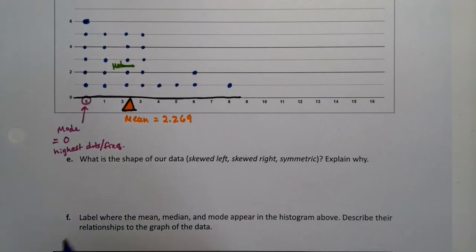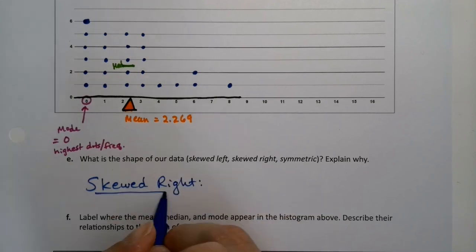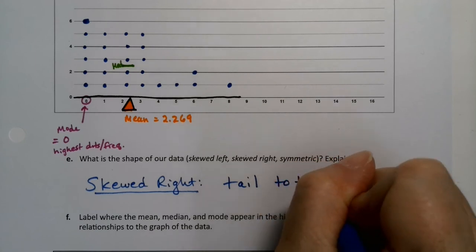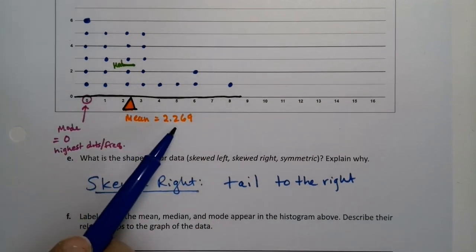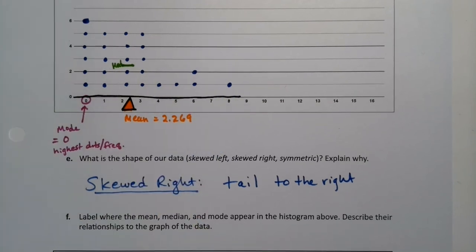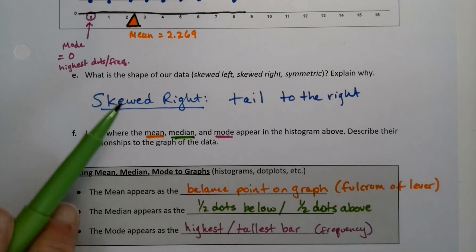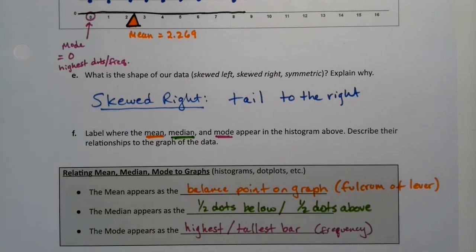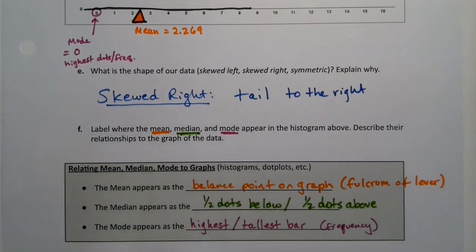Speaking of which, there's a tail to the right in this data, so this distribution is skewed right. The eight and those sixes are pulling the data in that direction. That's also why the mean is 2.269 rather than exactly 2 — those higher values pull the mean up. Remember: the mean as balance point is an important visual to keep in mind going forward.